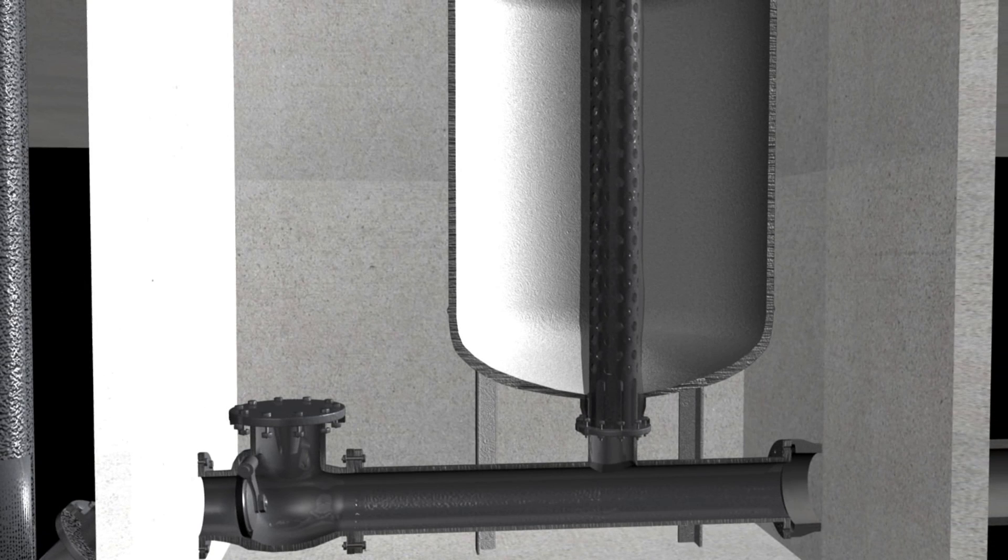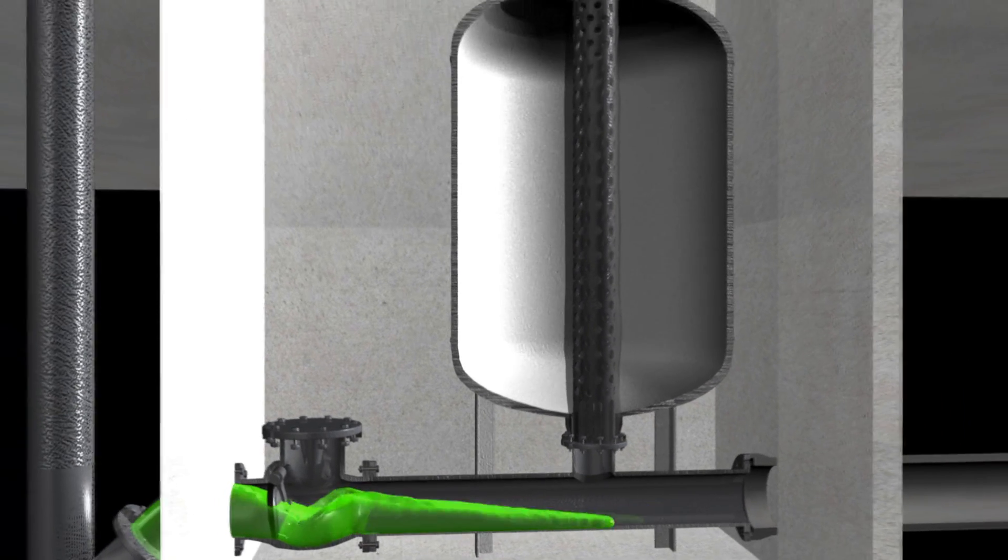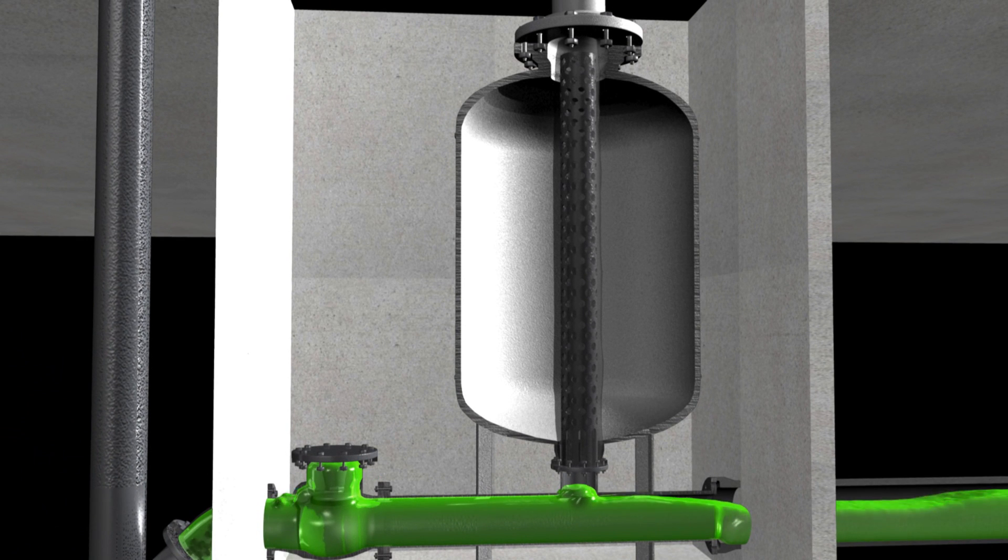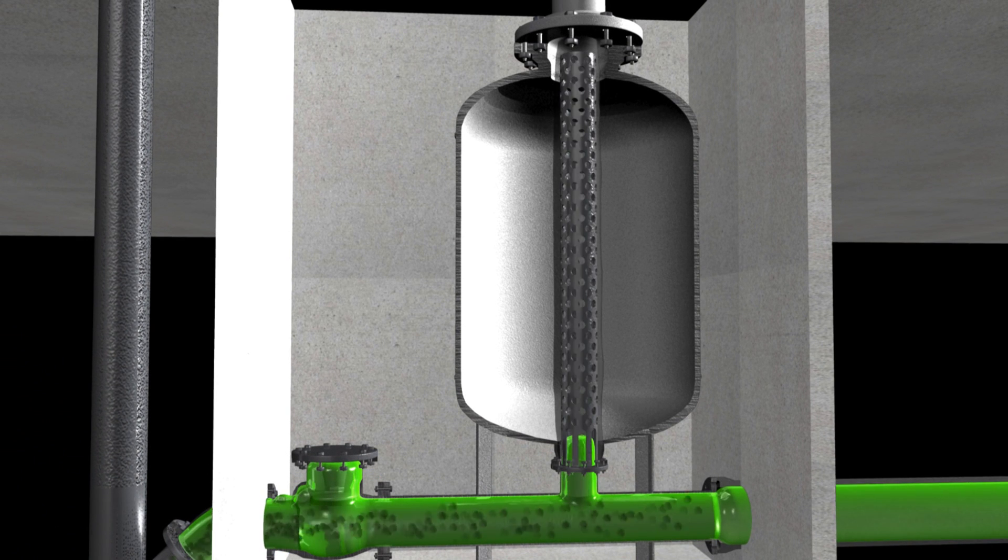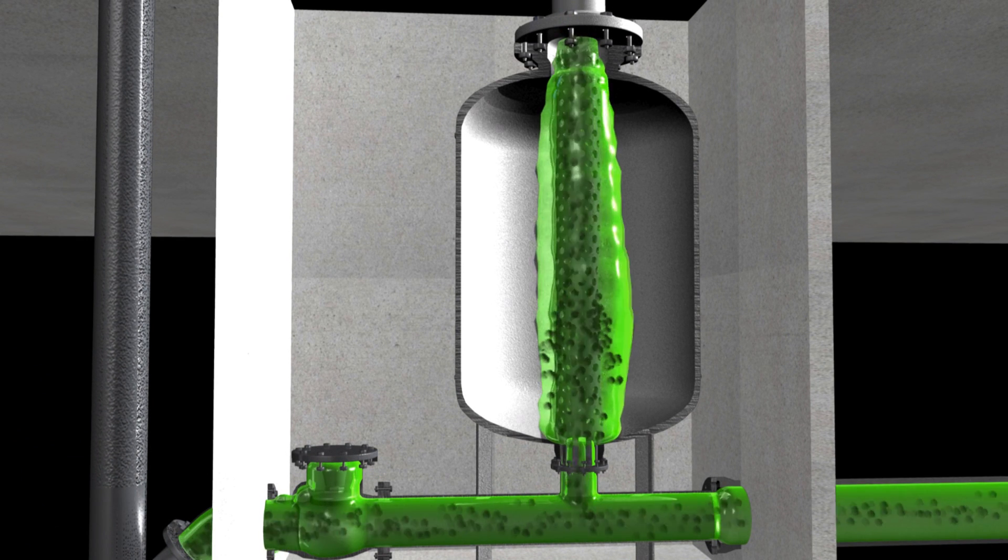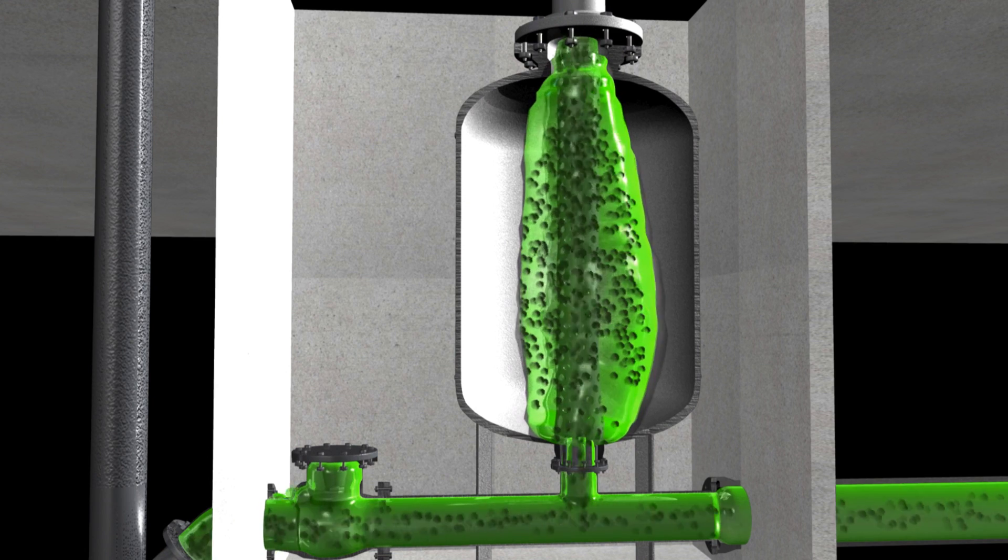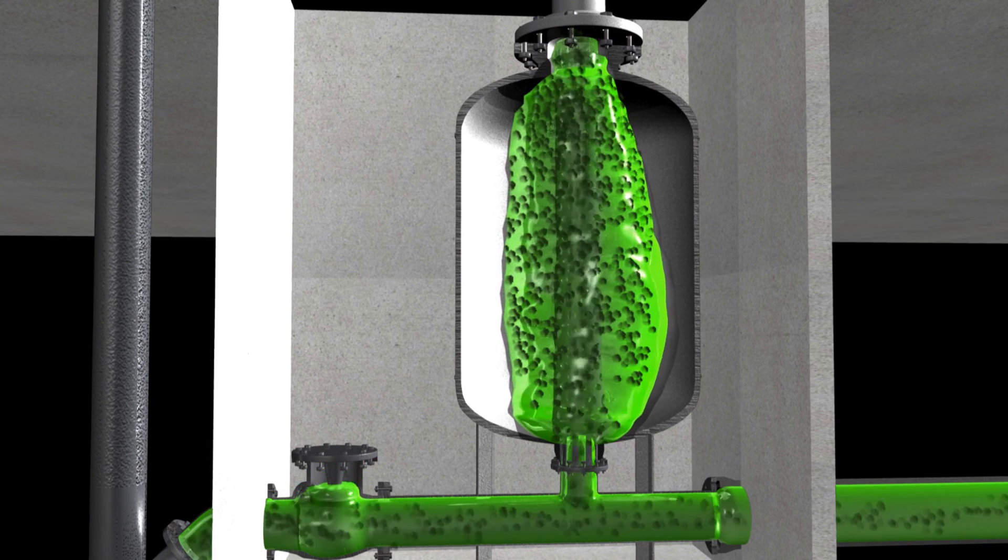The tank is pre-charged, compressing the bladder around the column. The initial start-up of the pump fills the tank to approximately two-thirds full by expanding the bladder outwards around the column, compressing the gas pre-charge in the tank.